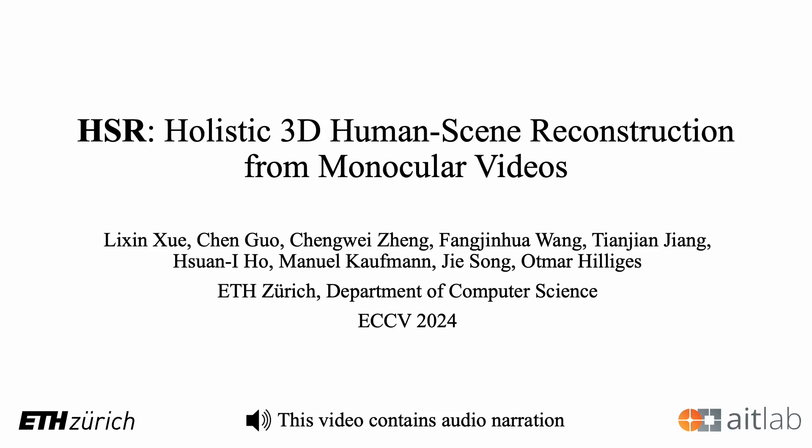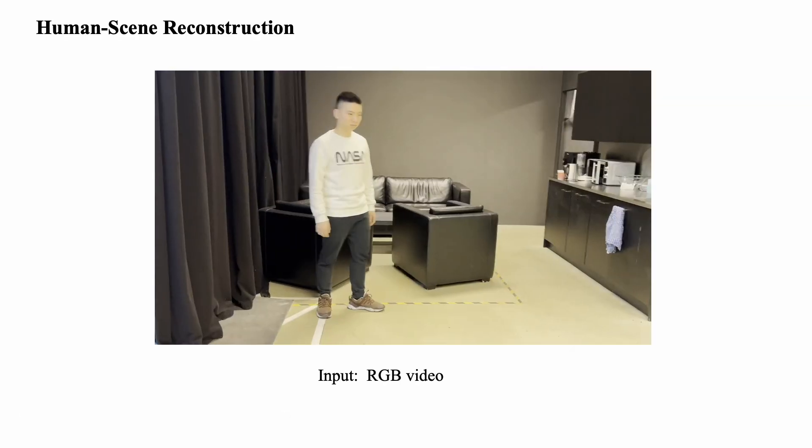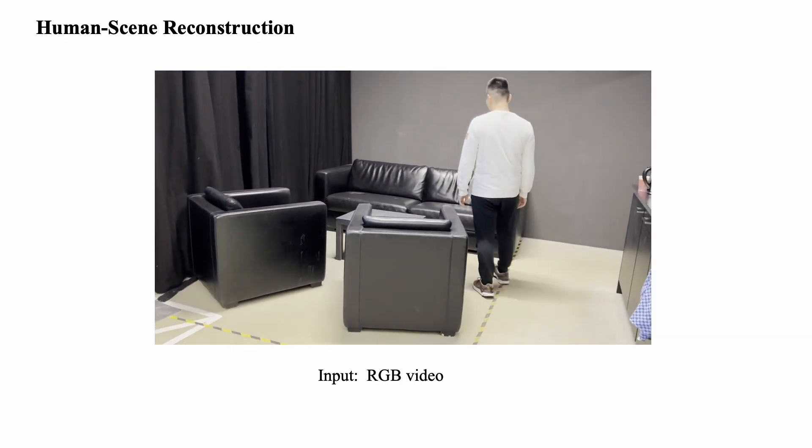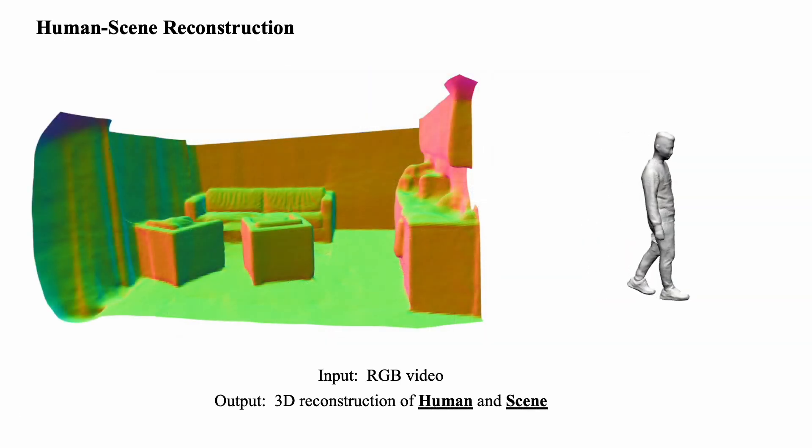We propose HSR, a novel unified framework for holistic 3D human scene reconstruction, given a monocular RGB video. Our method reconstructs 3D geometry for the human and the background scene.